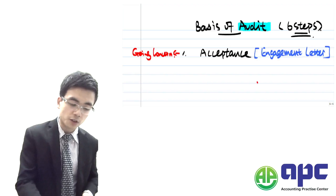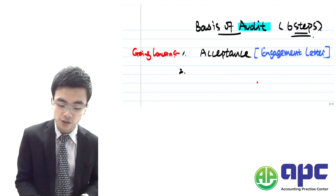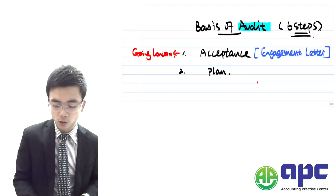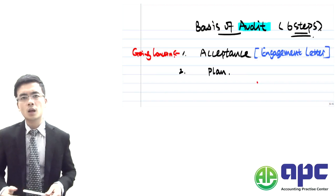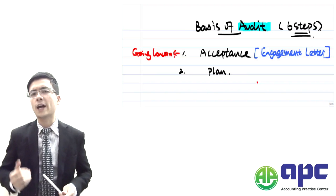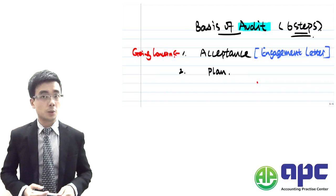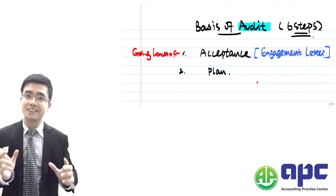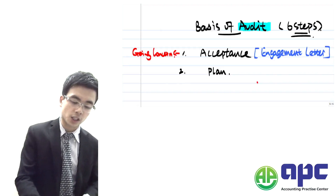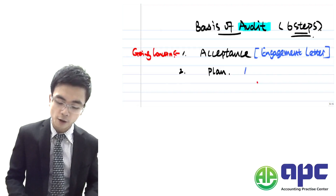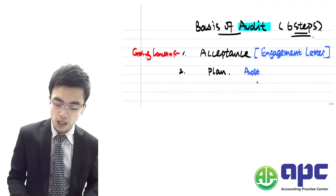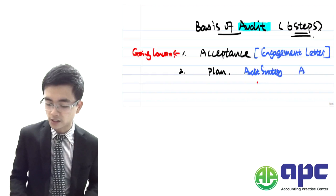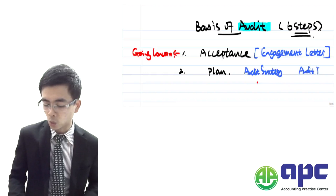After you've accepted the engagement with the client's company, the next thing you are going to do is plan your audit. Planning your audit is particularly tough. We are mainly dealing with two circumstances: firstly, we need to set up our audit strategy, and secondly, we are going to set up the detailed audit plan.